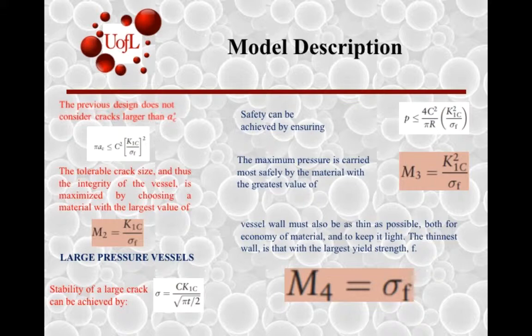For large pressure vessels, the goal is to design a vessel that can crack without yielding. If we compare this equation to the previous one, we take into account the thickness. We want to design something where a crack can go through the whole thickness and still be safe.